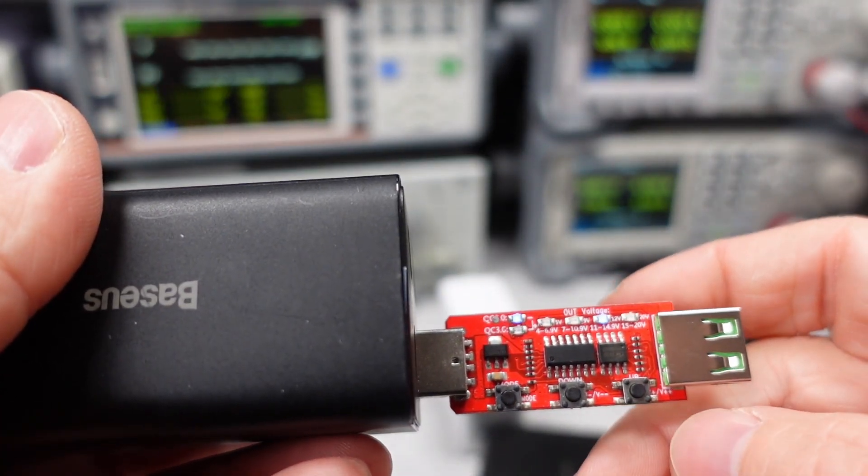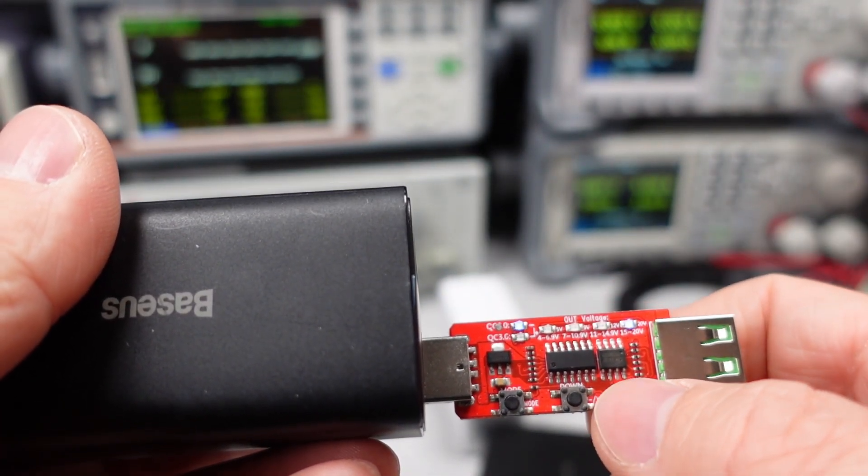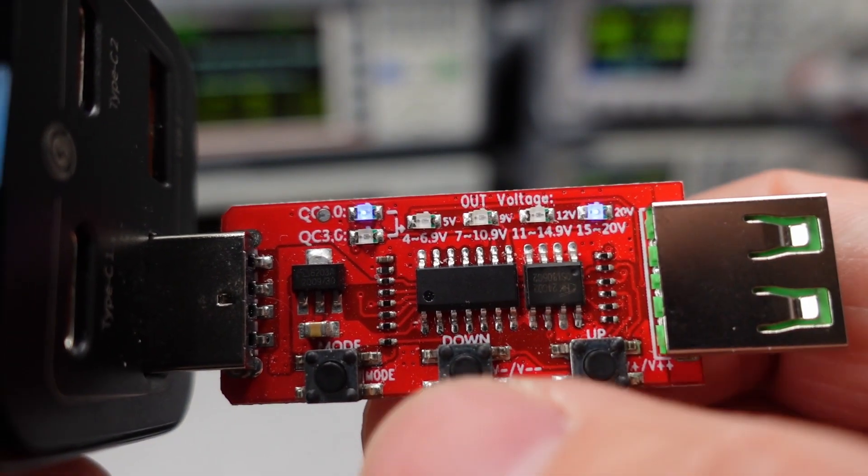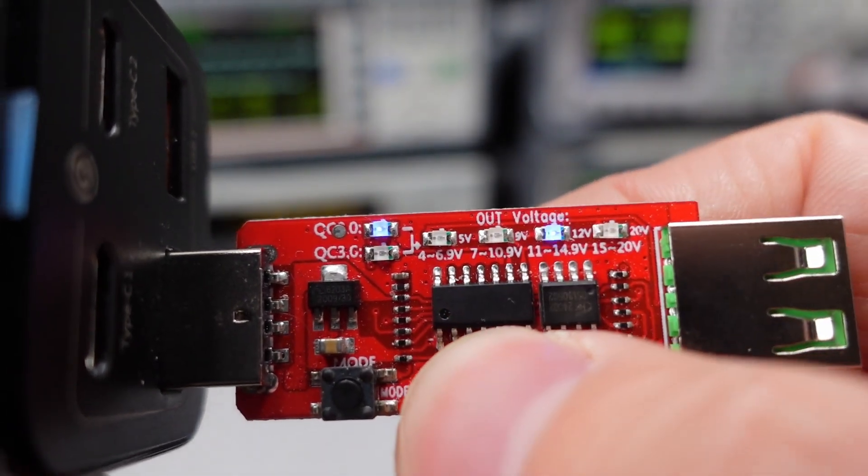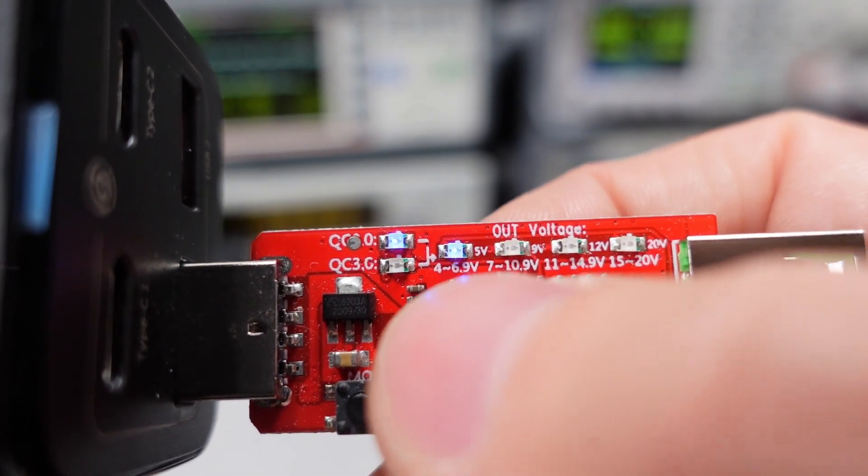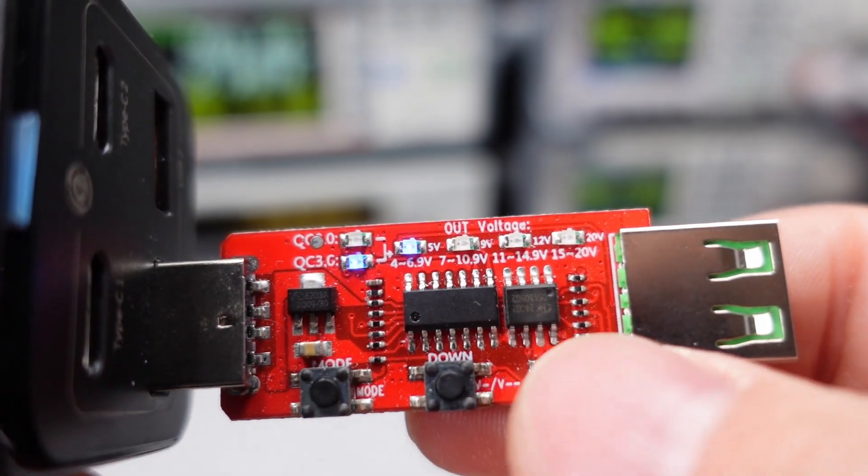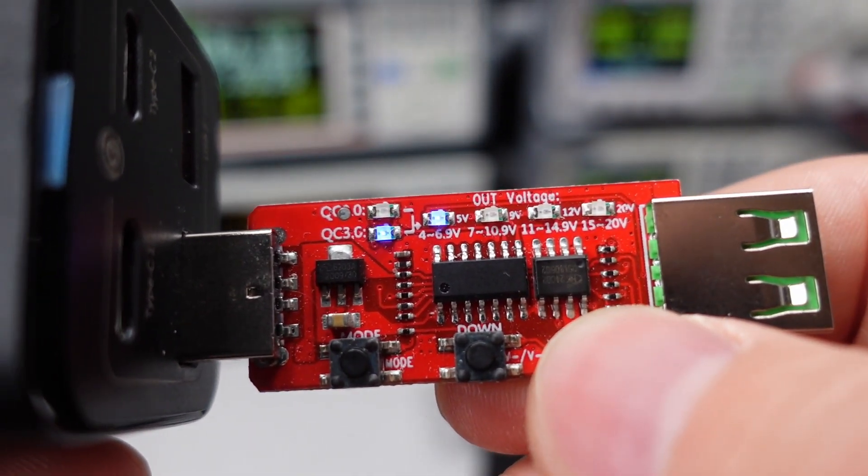To get higher voltages on a USB-A port, the main technology for this is the Quick Charge Protocol, or QC. The latest version is QC5, which supports up to unknown voltages and currents. It's a proprietary technology. Yay. QC3 is the most popular, which is mostly supported on USB-A ports up to 20 volts and 3 amps, so about 60 watts.